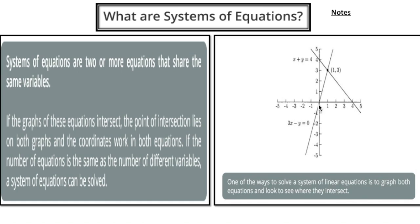Over here we have two different graphs. The one going upward is the function 3x minus y equals zero, and the one going downward is x plus y equals four. If you notice, they intersect at this point right here — marked in blue — at point (1, 3). So according to the graph, the x value is one and the y value is three.